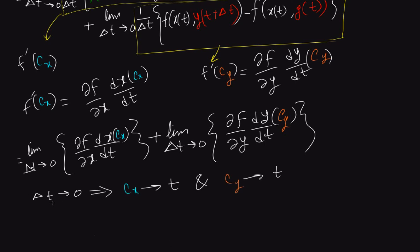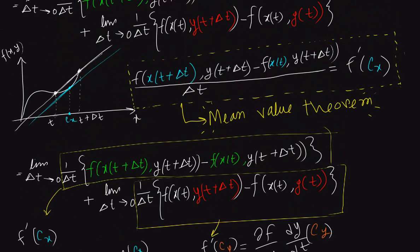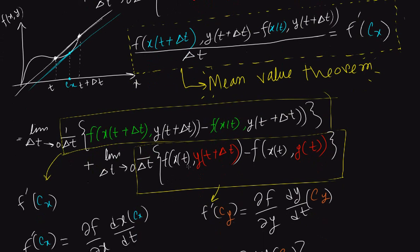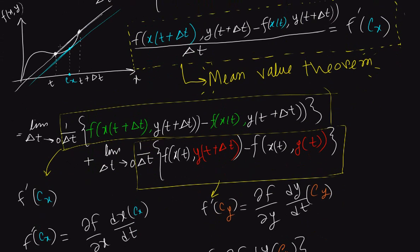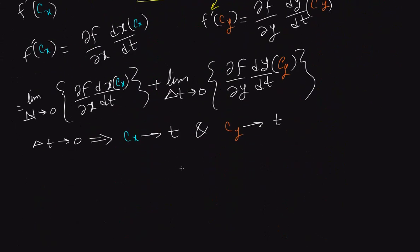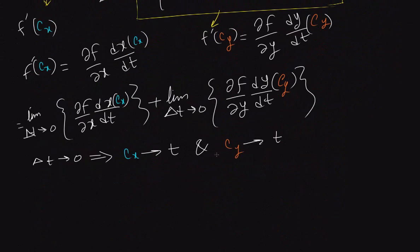If the limit of del t approaches zero, the cx approaches t. Because we can see this line here is del t. When it approaches zero, then these two points get closer and closer and closer. Then they become cx. That means we can say at this point, if del t tends to zero, cx tends to t. The same goes for cy, it tends to t.